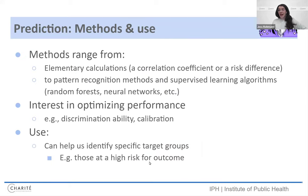There were a lot of all-cause mortality recorded in Nembro compared to the past years and months. Then we have prediction methods. Again, you can have elementary calculations, maybe a correlation coefficient or a risk difference, but also more advanced pattern recognition methods, supervised learning algorithms such as random forests, neural networks. Maybe some of you have worked with these methods. Your central interest when you're predicting is optimizing performance. So something like discrimination ability, area under the curve, calibration, calibration plots.